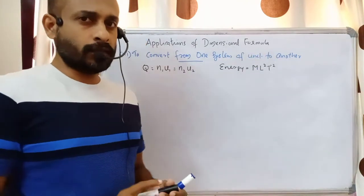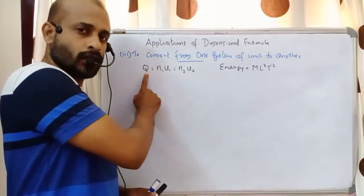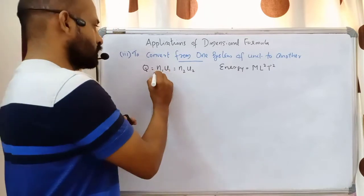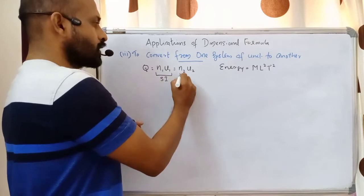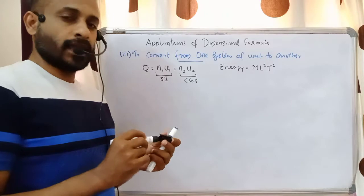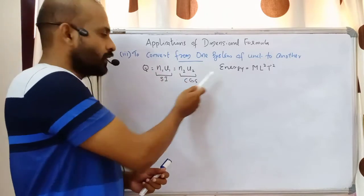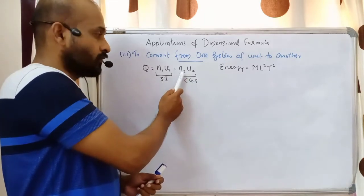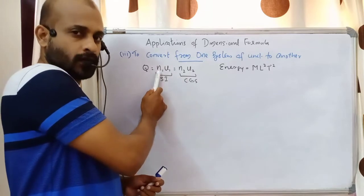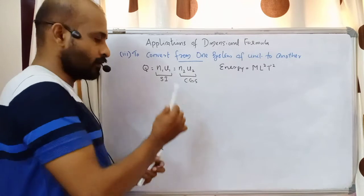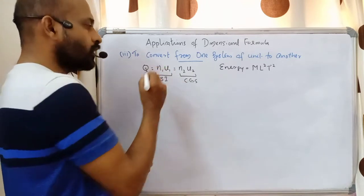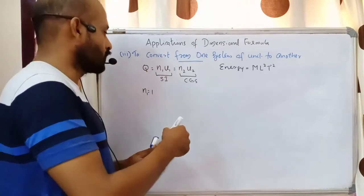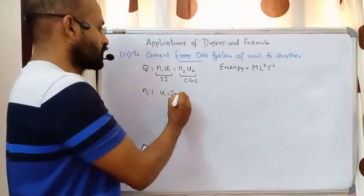Energy is a physical quantity that we can express in two systems: N1 U1 in one system — let us choose this to be the SI system — and we want to convert to CGS. N1 is the number of that particular quantity in the SI system and N2 is the number in the CGS system. We need to find out the value of N2. For simplicity we choose N1 to be one. U1 is the unit in the SI system; energy has the unit Joule in SI, so U1 is equal to Joule.